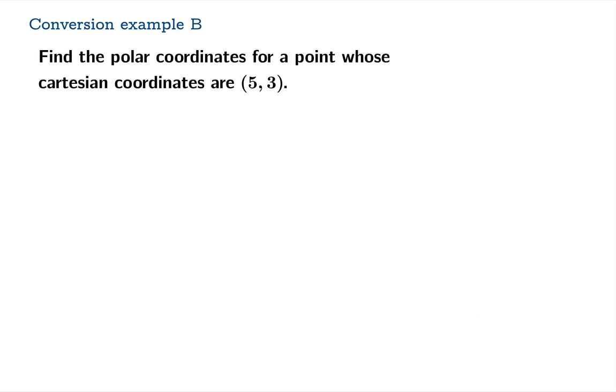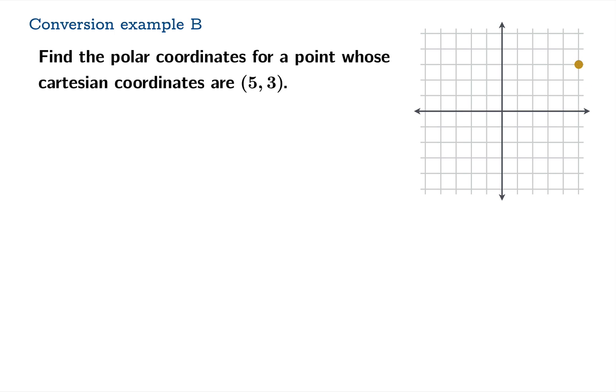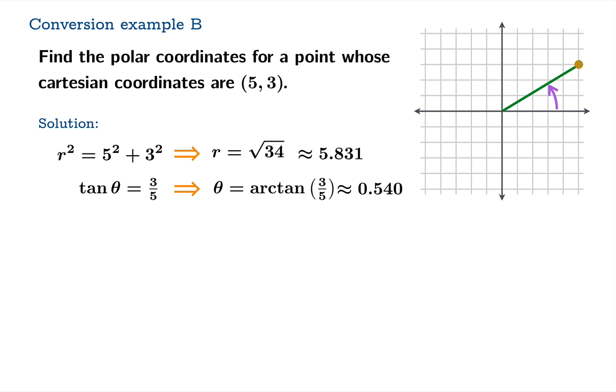So now let's go in the other direction. Let's find the polar coordinates for a point whose Cartesian coordinates are (5,3). It's always a good idea to draw a sketch and get a rough idea of what's going on, but here's the point (5,3). And we're looking for r and theta in this picture. So we know r squared is 5 squared plus 3 squared, and we know tan theta is 3 over 5. And so we can easily solve these equations to find that r is the square root of 34, and theta is arctan of 3 fifths. The polar coordinates are root 34, arctan of 3 fifths.